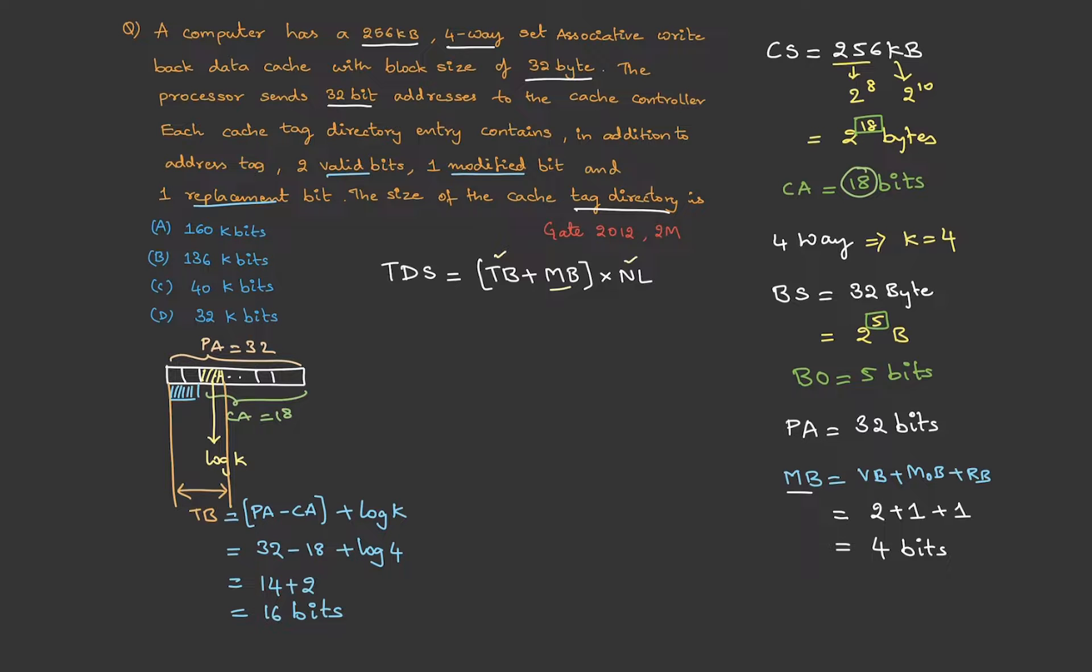The next thing is, we need the number of lines. Number of lines is cache size by block size. That is 2 power 18 by 2 power 5. That is 2 power 13 lines. Alright, now we have everything.